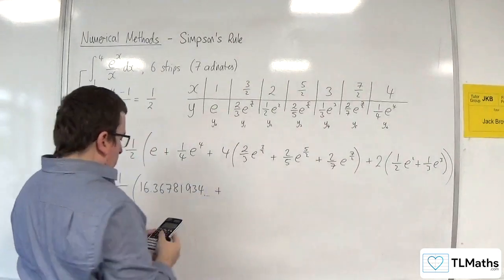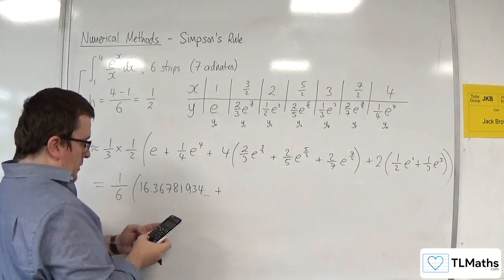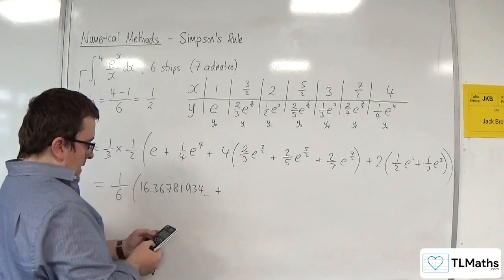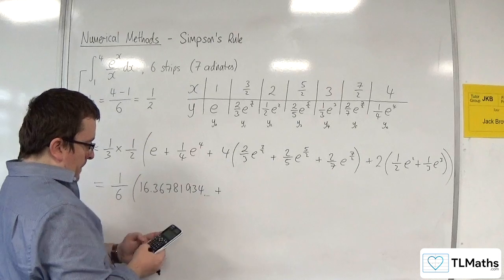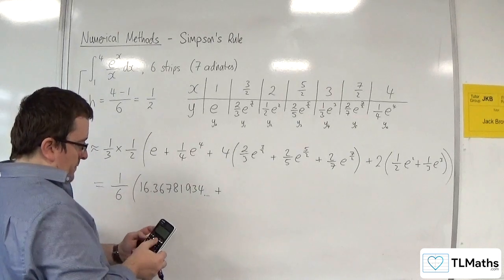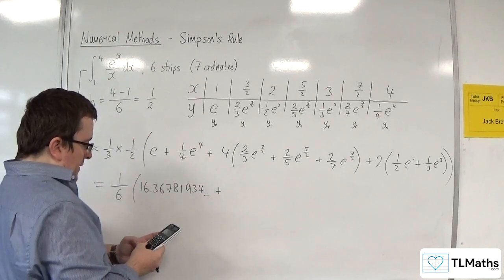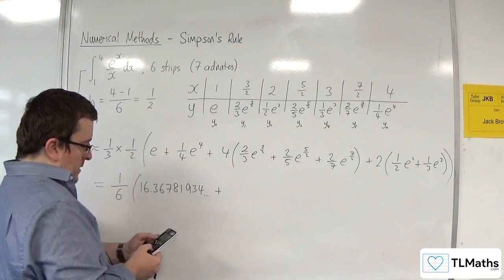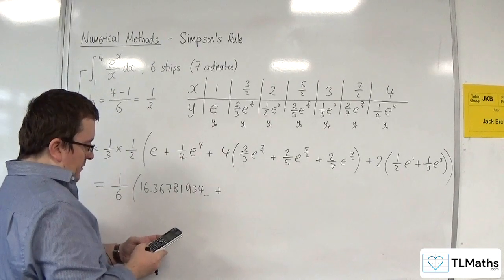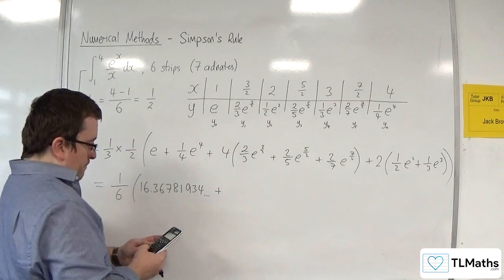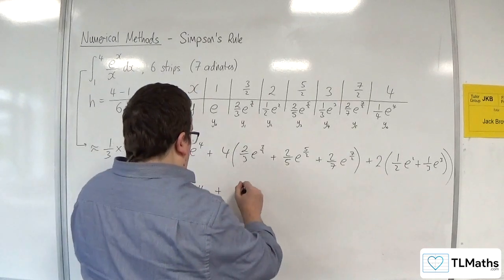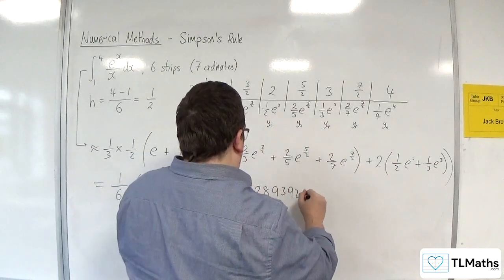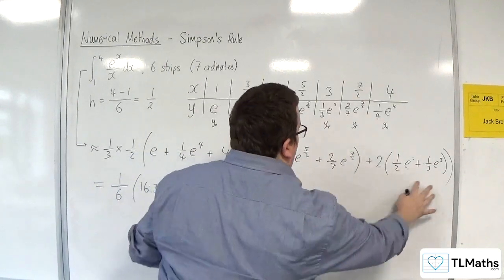So now this bit. So 4 lots of 2 thirds e to the 3 halves, plus 2 fifths e to the 5 halves, plus 2 sevenths e to the 7 halves. We should get 69.289392.